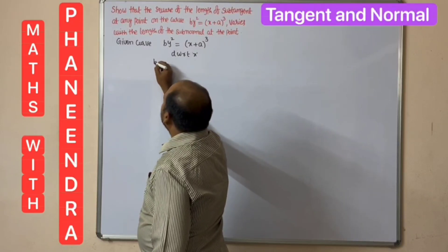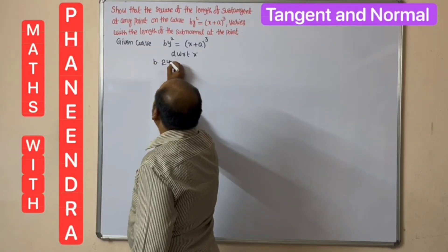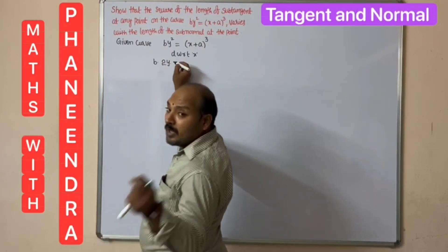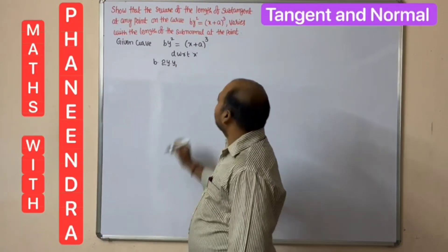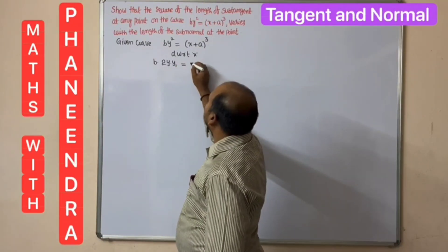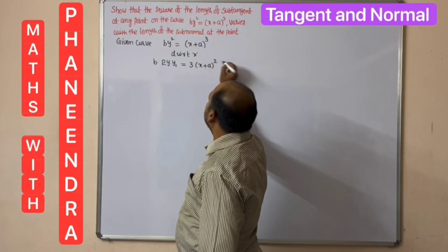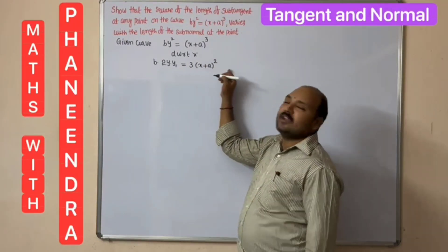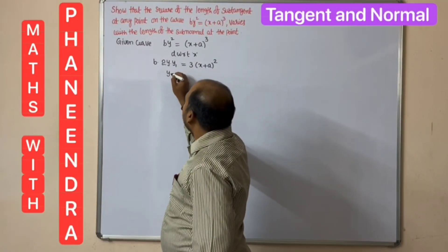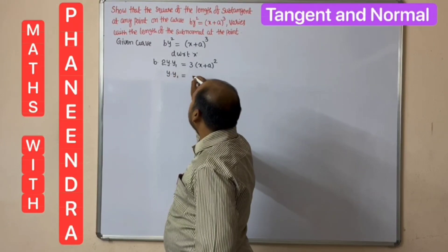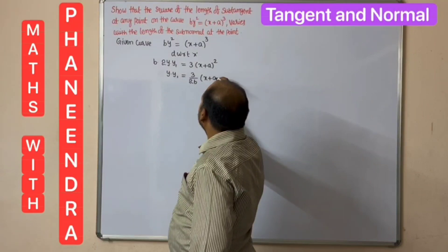Differentiating the left side: derivative of y² is 2y · dy/dx, which we write as y₁. On the right side, using the power rule: 3(x + a)² · 1. So we get 2y · y₁ = 3(x + a)². Rearranging: y · y₁ = (3/2) · (x + a)².